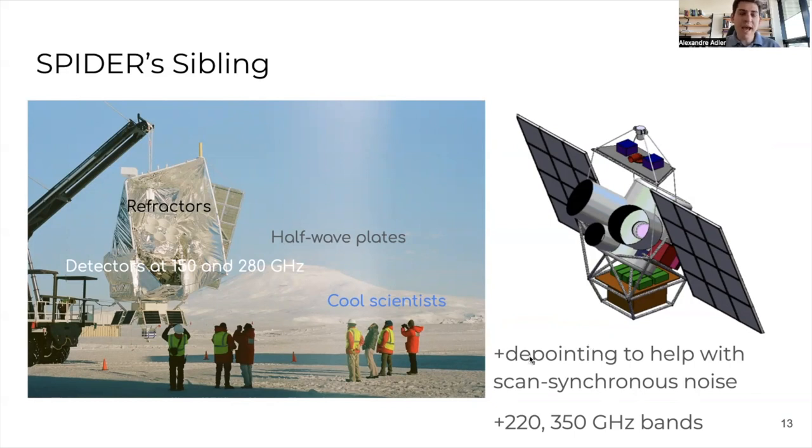TAURUS builds on the heritage of Spider, which has done two flights out of Antarctica with refractors, detectors at 150 and 280 gigahertz, polarization modulators that we will draw on to make the ones for TAURUS to reduce systematic noise and to increase the condition number, which is how well we're observing each area of the sky. The most important thing is that TAURUS will use a lot of the cool scientists that made Spider happen. The main extra thing in TAURUS is that the multiple telescopes will be co-pointing to figure out if some signal you see is linked to azimuthal-dependent noise in your experiment, or if it's actually a signal that comes from the sky. And those two extra 220 and 350 gigahertz bands will help us characterize the dust much better.